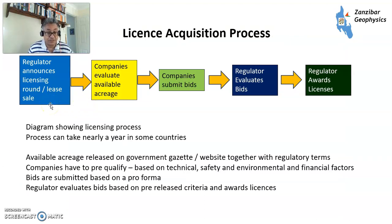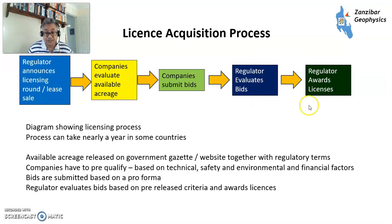The regulator announces a licensing round or lease sale, which is published in the government gazette or government website. Companies then evaluate the available acreage — they have some time to do this, typically six months or so — before a deadline to submit a bid. Companies submit a bid based on a proforma. The regulator then evaluates the bids and awards the licences in a public ceremony. Sometimes they also disclose what the other bids were. The licence is then awarded, the licence term starts, and the oil and gas company can get on with the job of exploring.